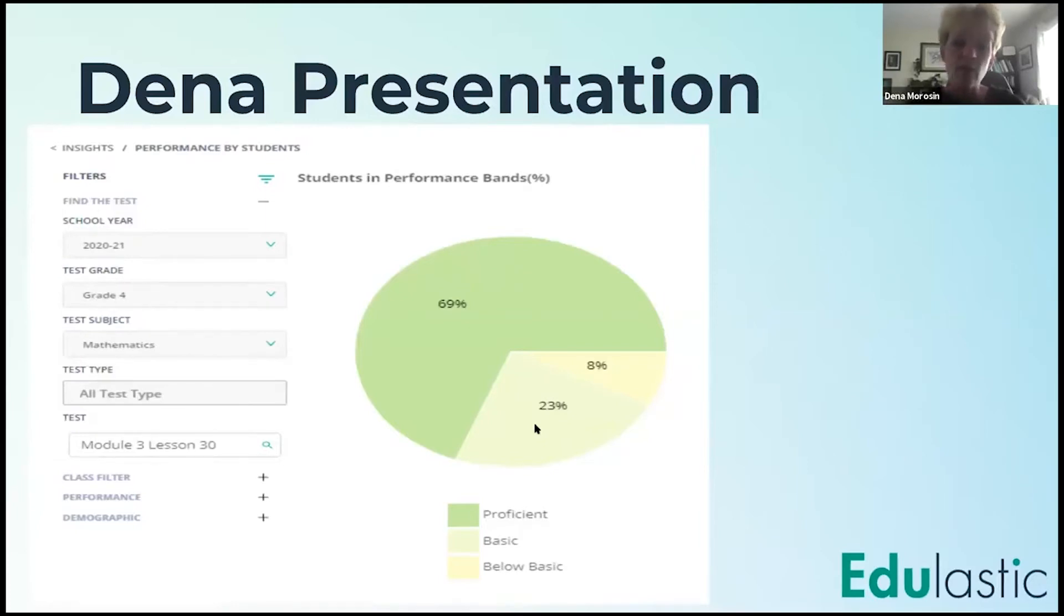So when we're getting ready to pull out for intervention groups, we can very quickly go to this standard and say, okay, these 10 kids are going with you, these 12 kids are going with you, and the high percent kids are going to go with the third teacher, and we're going to extend their knowledge.